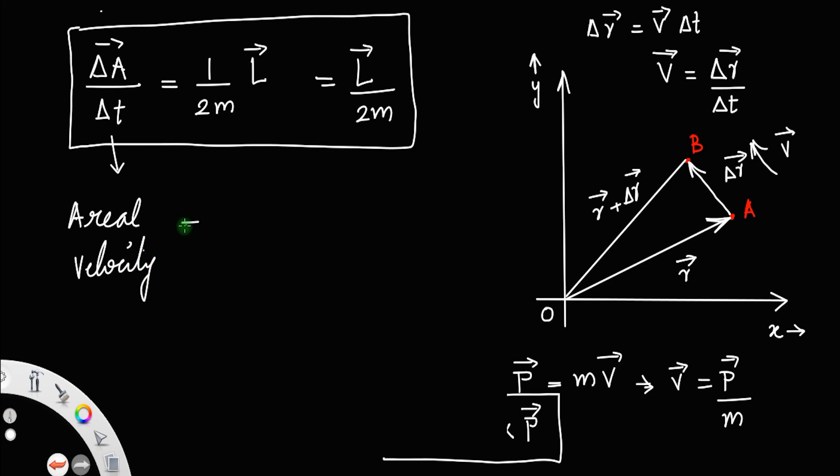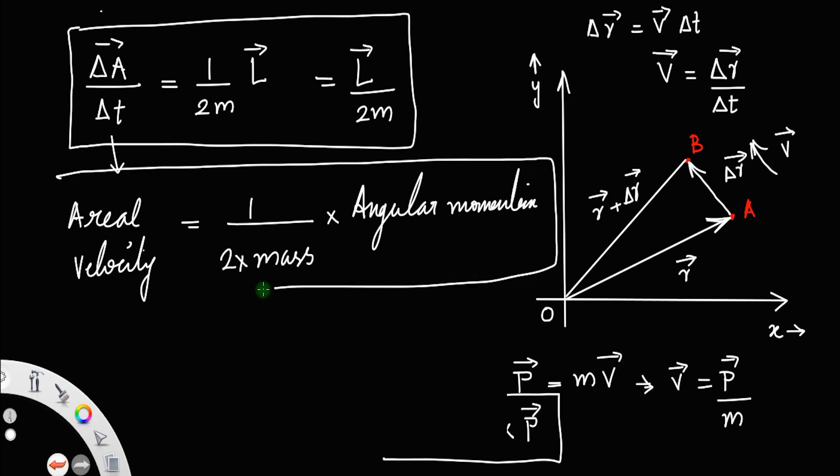Areal velocity is equal to 1 by 2 into mass of the particle into angular momentum. So, this is the relationship between angular momentum and areal velocity.